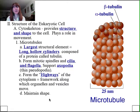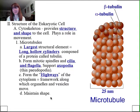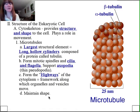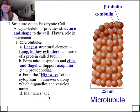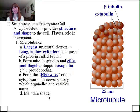Form fits function: if a cell is lacking or has a mutation in its microtubules and it lacks its shape, it may also lose its function. A good example within a multicellular system is neural cells — if they actually lack their microtubules, they really lose their function because they lose their shape.